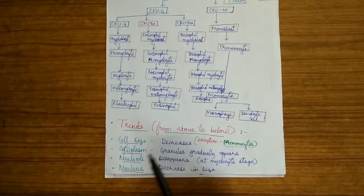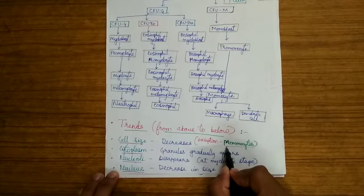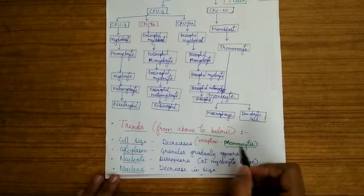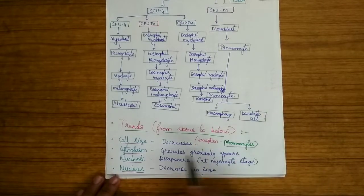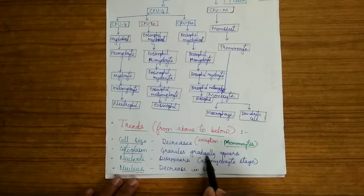The cell size gradually decreases from above to below. The exception is promyelocyte because its cell size is increased than the before stage. In the cytoplasm, granules gradually appear from above to below.